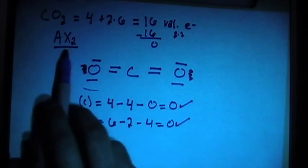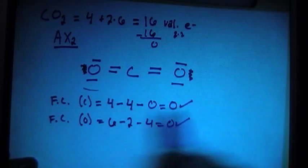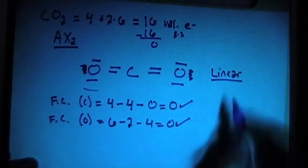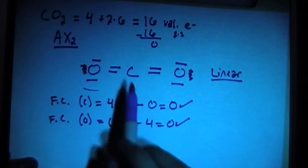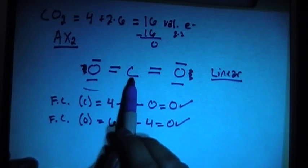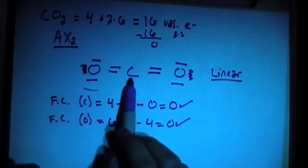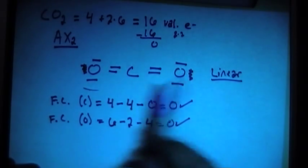So now since we said that this is an AX2 molecule, that's going to be a linear shape. And we can also check for the hybrid orbitals, carbon being the center atom in this molecule. There's one group, two groups, two groups attached.